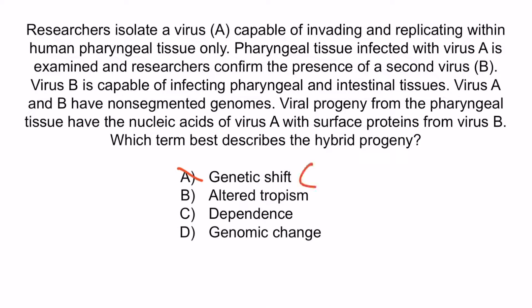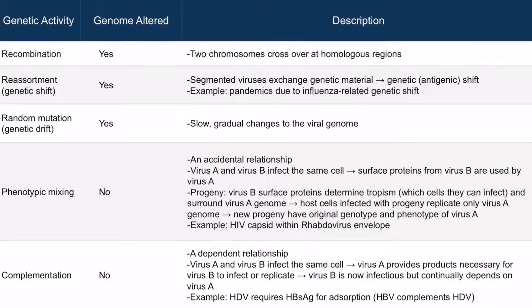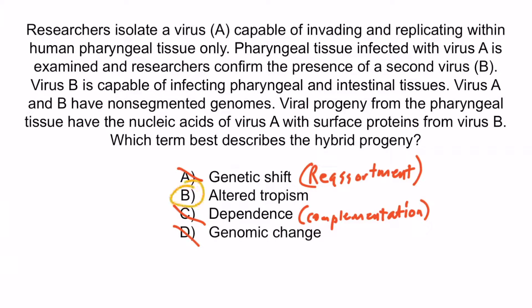Choice A is wrong because genetic shift refers to reassortment, which only occurs with segmented viruses such as influenza. Choice C is wrong because dependence refers to complementation — virus A can complete its life cycle without other viruses, so it is not dependent, and the relationship does not represent complementation. Choice D is wrong because the altered tropism is temporary, not a permanent genomic change — recall that phenotypic mixing and complementation do not alter the genome. So the correct answer is B, altered tropism.